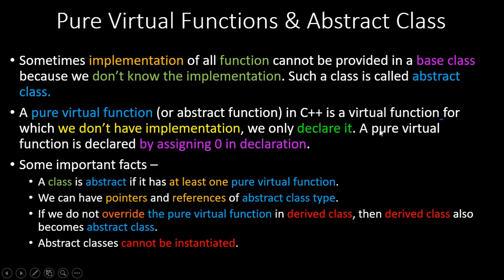I'll show you how the syntax looks in a minute, but first the theory. A pure virtual function is declared by assigning zero in the declaration. Some important facts: a class is abstract if it has at least one pure virtual function. We can have pointers and references of abstract class type, but an abstract class cannot be instantiated. Also, if we do not override the pure virtual function in a derived class, the derived class also becomes abstract.